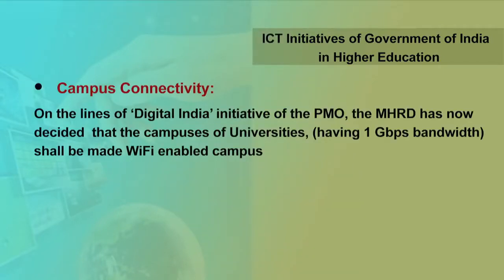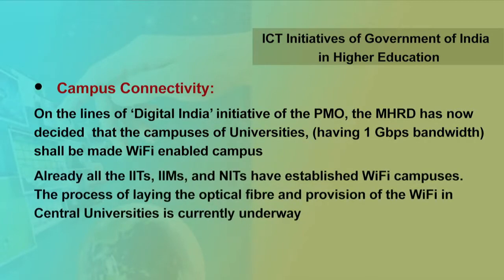On the lines of Digital India initiatives of the PMO, the MHRD has now decided that the campuses of universities having 1 GBPS bandwidth shall be made Wi-Fi enabled campuses. Already all the IITs, IIMs and NITs have established Wi-Fi campuses. The process of laying the optical fibers and provision of Wi-Fi in central universities is currently underway and some of the universities have also been connected.